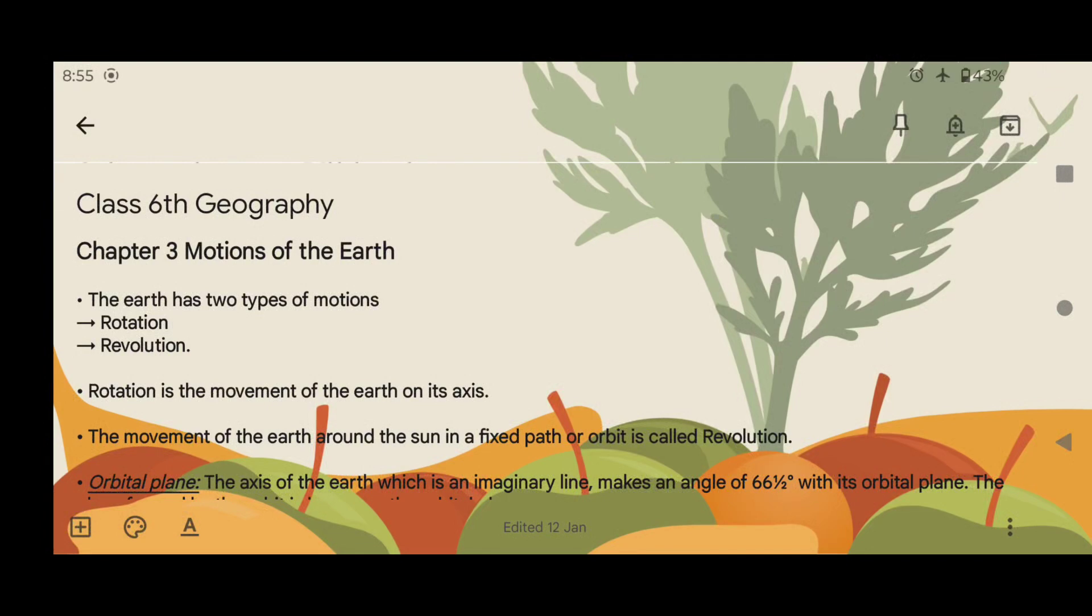Hello, welcome to Study Circle. Today we are going to read Class 6th Geography, Chapter 3: Motions of the Earth. The Earth has two types of motions, rotation and revolution.